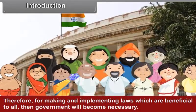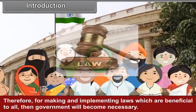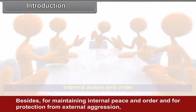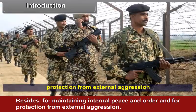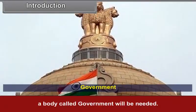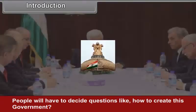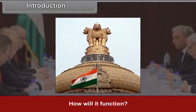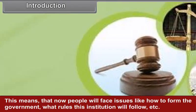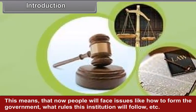Therefore, for making and implementing laws which are beneficial to all, a government will become necessary. Besides, for maintaining internal peace and order and for protection from external aggression, a body called government will be needed. People will have to decide questions like how to create this government, how it will function, how to form the government, and what rules this institution will follow.